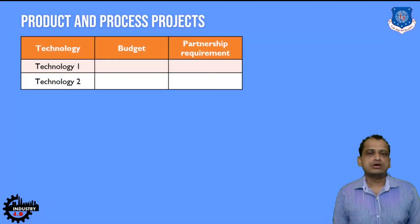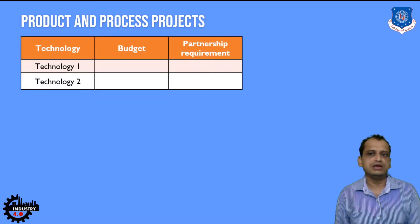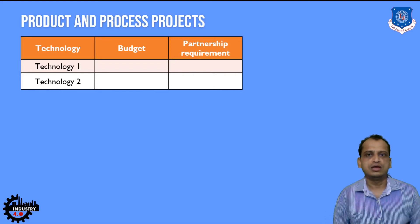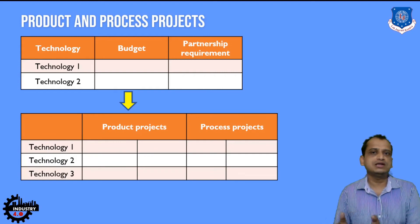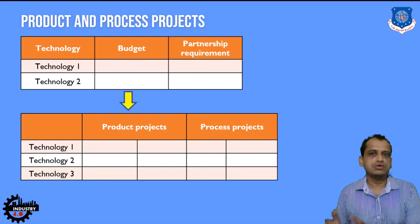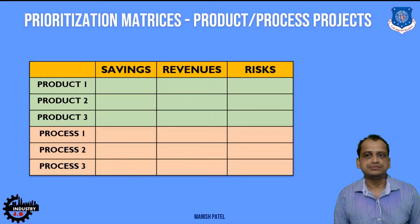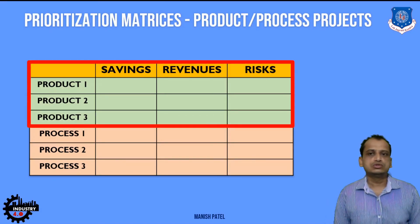For product and process projects, you divide them based on different technologies. These metrics are made so that you can disintegrate them based on the different technologies you are employing in the Industry 4.0 implementation for new product development. You can also disintegrate into product projects and process projects, incorporating different technologies based on budget and partnership. The final metrics are based on the product-wise classification.